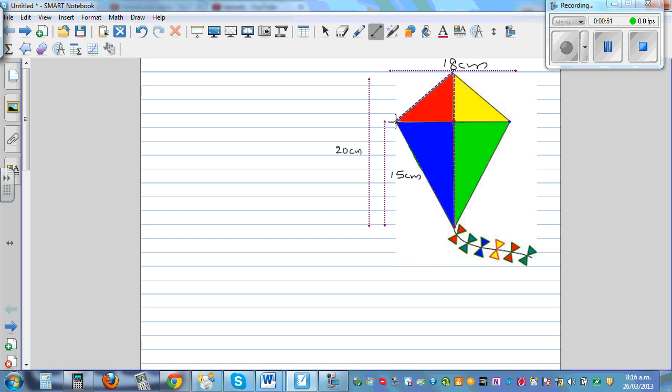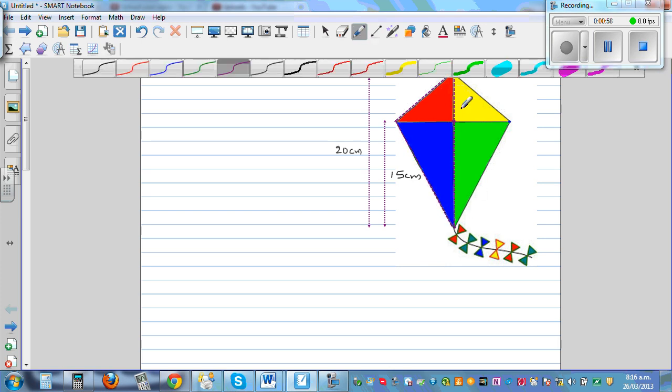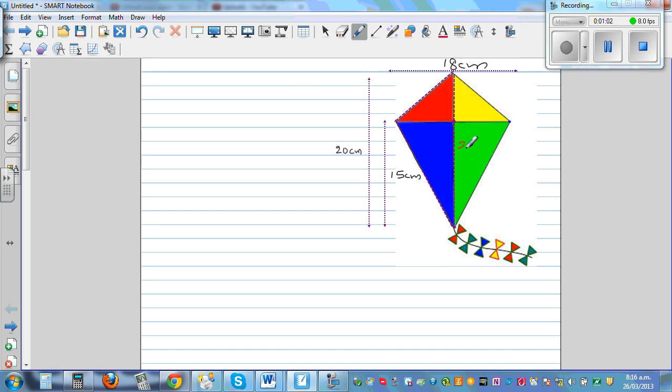What's the base of that triangle? The base is 20. And what's the height? This height, the horizontal distance is 19, so this has to be 9.